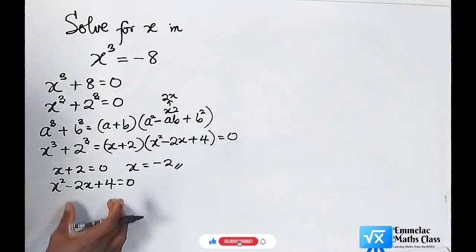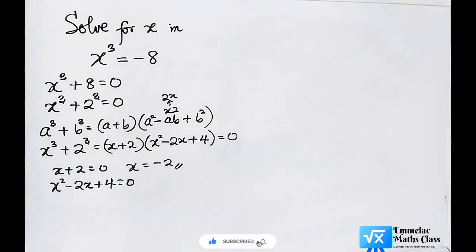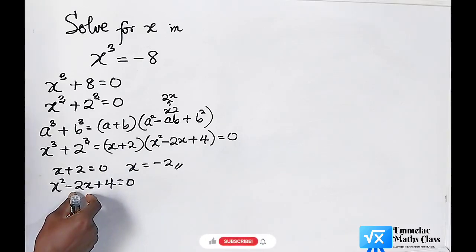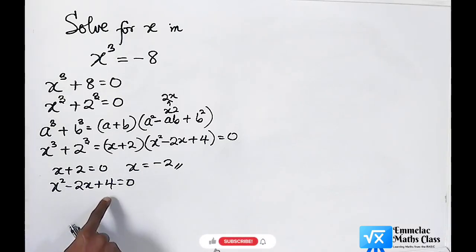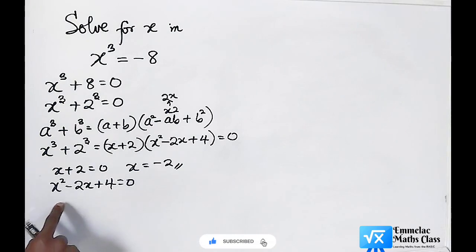By looking at this, we can't actually factorize because no two factors that you add give you negative 2 and multiply to give you positive 4. The reason is the sum here is having a negative sign. I suggest no two factors that you multiply, having a negative sign, will give you a positive answer. Because negative times negative will give us positive.